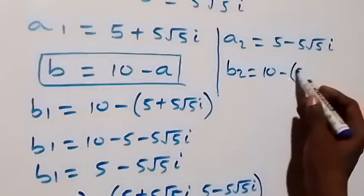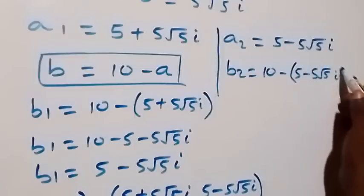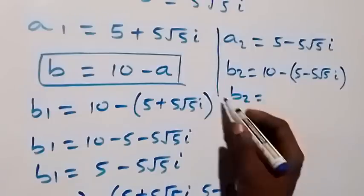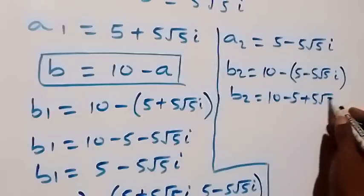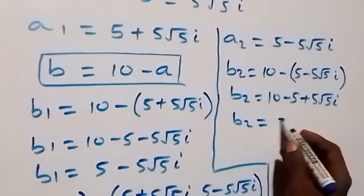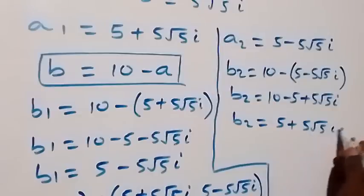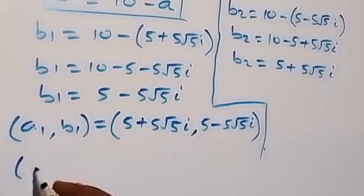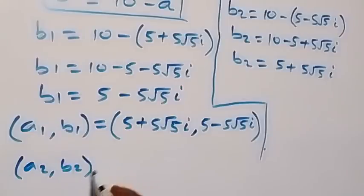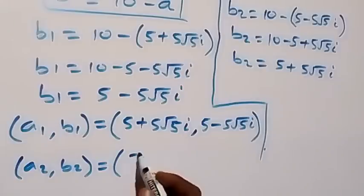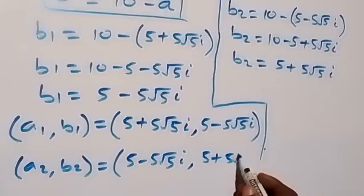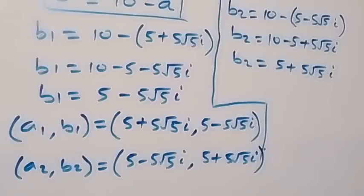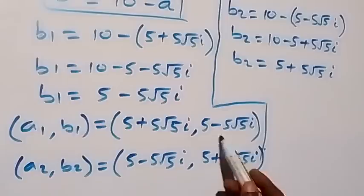For the second solution, B₂ equals 10 minus A₂, which is 10 minus (5 minus 5·root(5)·i), giving B₂ equals 5 plus 5·root(5)·i. The second set of solutions is: A₂ = 5 − 5√5·i and B₂ = 5 + 5√5·i. Note that these are complex solutions and A₁ equals B₂ while B₁ equals A₂.